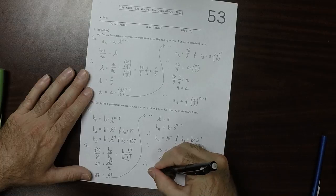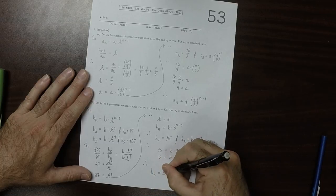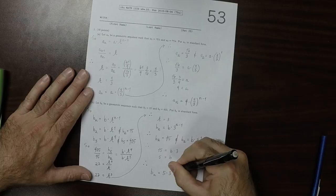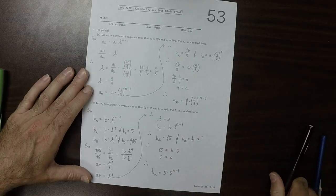And therefore, we know that b_n is 5 multiplied by 3 to the power of n minus 1. And that's the answer.